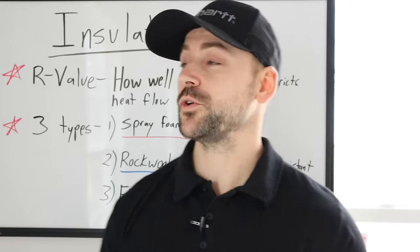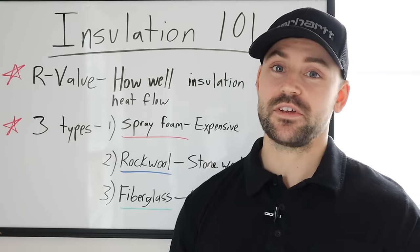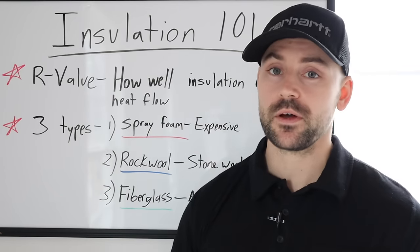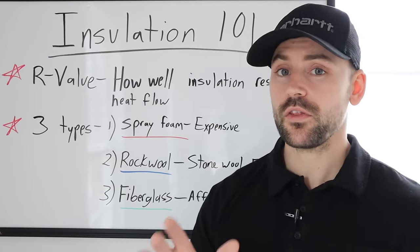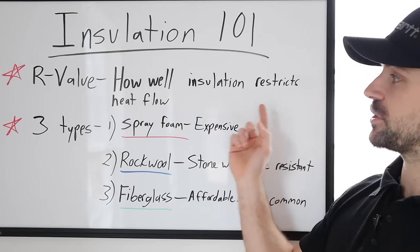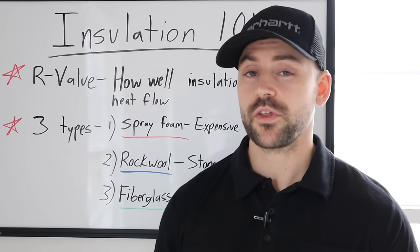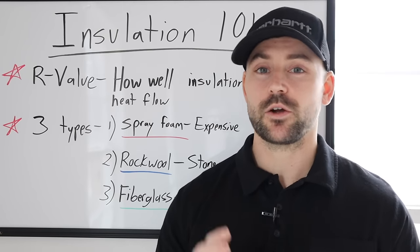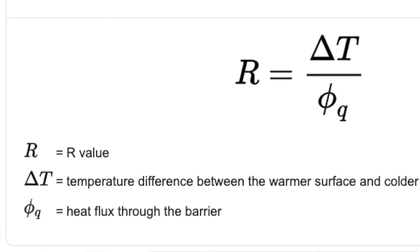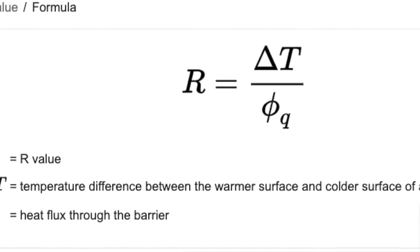Welcome to Insulation 101. All insulating material has what's called an R value rating. The R value represents how well the insulation can restrict heat flow from your house. The R value is actually an equation — I'll put it up on the screen so you can take a look at it.